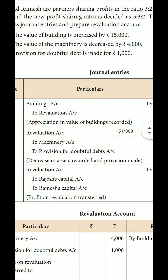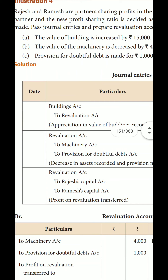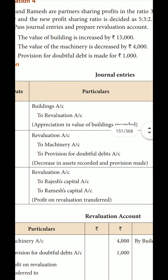The provision for doubtful debts is made for 1,000. This is a loss. The loss for machinery is 4,000. If debtors are 50,000, then the provision of 1,000 is a loss. When there is a provision for doubtful debts, it is a loss — so we deal with it as a loss of assets.